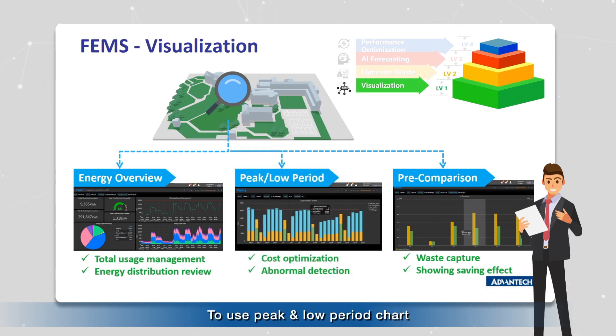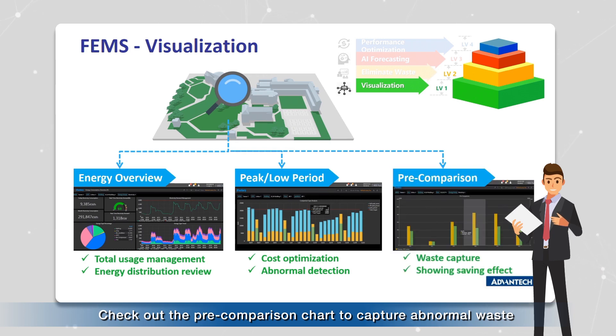Using the peak and low period chart, you might find unusual usage proportions during the low period. Check out the pre-comparison chart to capture abnormal waste.